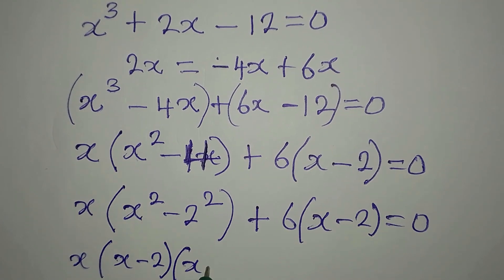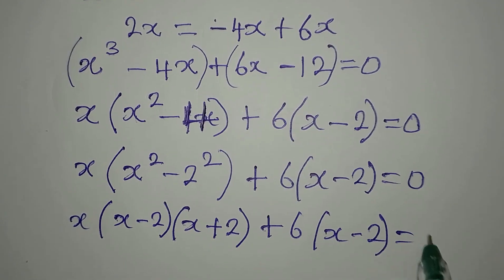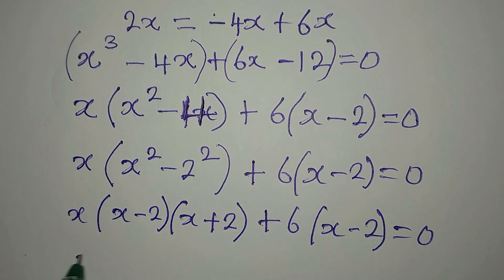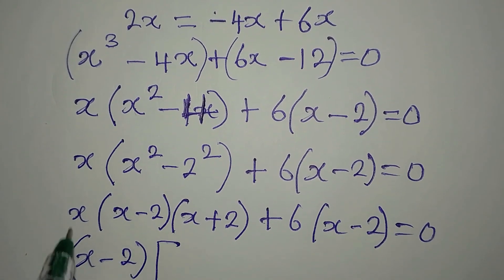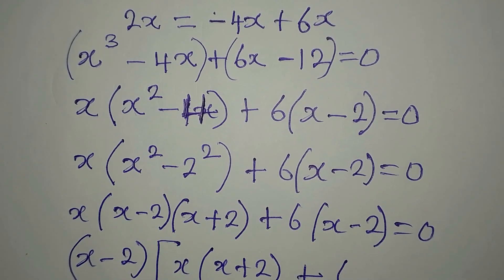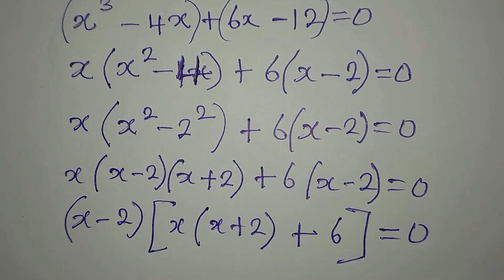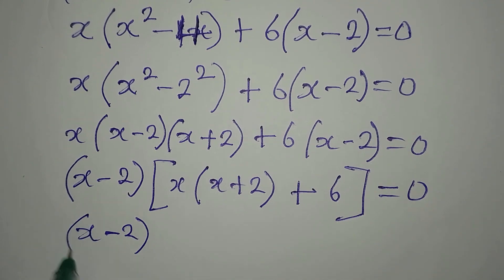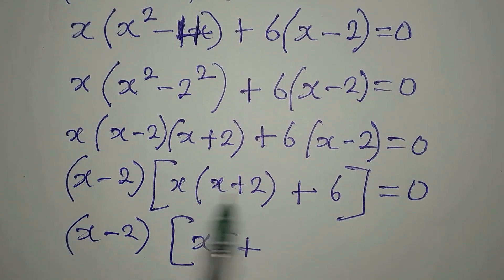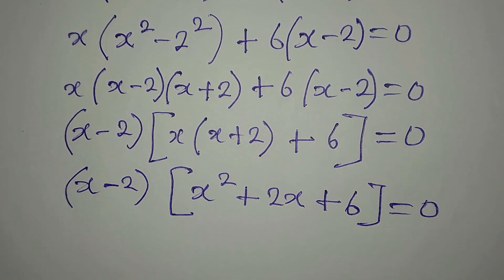Now x minus 2 appears in both terms, so x minus 2 comes out as a common factor, giving (x minus 2)[(x plus 2) plus 6] equals 0. Opening the bracket, we have (x minus 2)(x² plus 2x plus 6) equals 0.